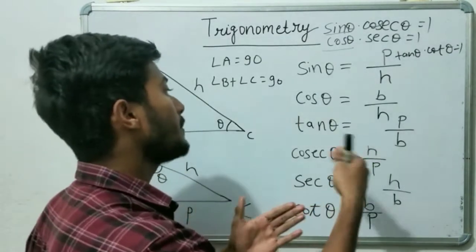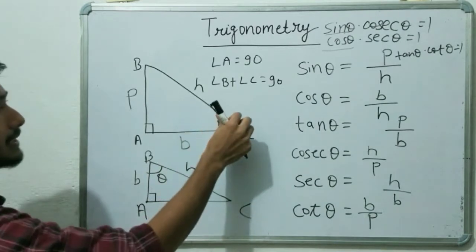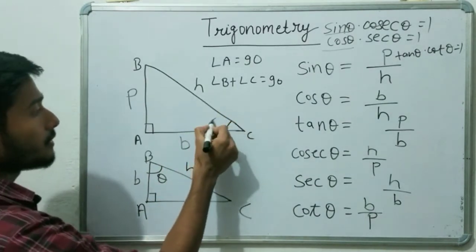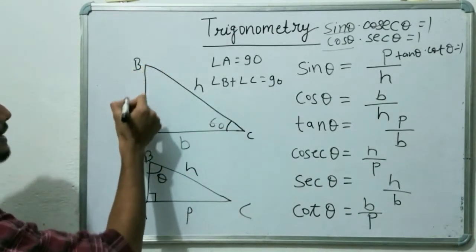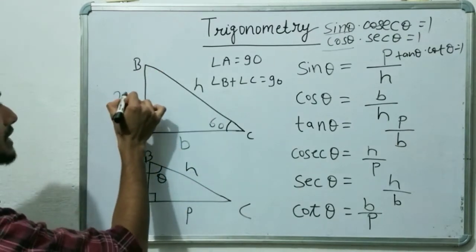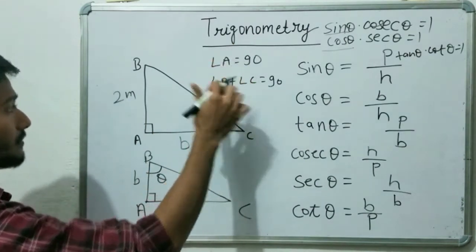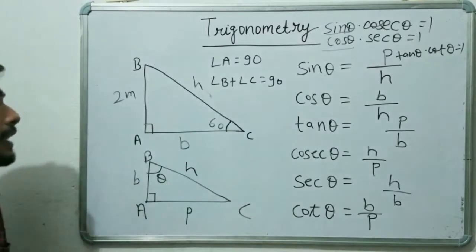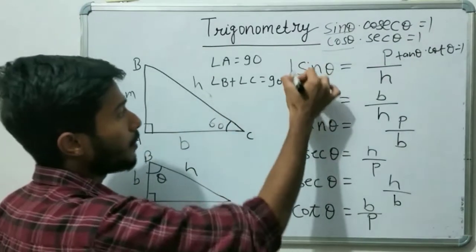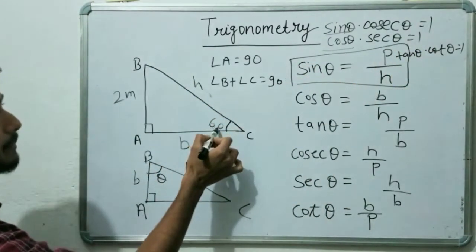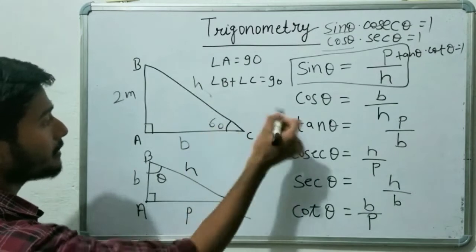Now, what kind of questions will come in your exam on these formulas? A question will look like this: you are given theta equal to 60 degrees, and given that side AB, which is the perpendicular P, equals 2 meters. You are not given H. If they ask you to find H, you use the formula sin theta equals P over H. Theta is 60 degrees, P is 2 meters, and you have to find H.